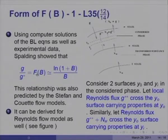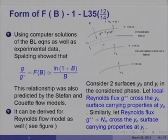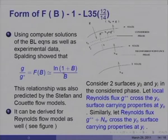Using computer simulations of the boundary layer equations as well as experimental data, Spalding showed that G over G* equals F(B), where that function F(B) is nothing but ln(1 + B) divided by B. This is the same relationship we had also predicted using the Stefan flow model and the Kuwait flow model. The Stefan flow model was for diffusion mass transfer only, whereas the Kuwait flow model included convection. This relationship does not contain any Reynolds number, Prandtl number, or anything like that. We now take up whether this relationship can also be derived from the Reynolds flow model, just as we showed mathematically for the Stefan and Kuwait flow models.